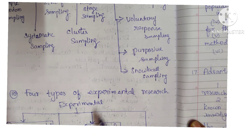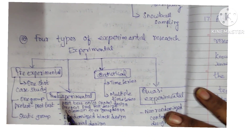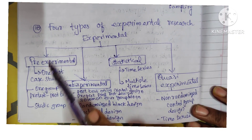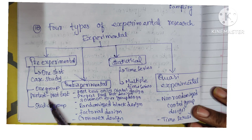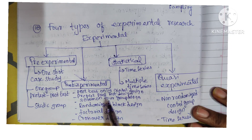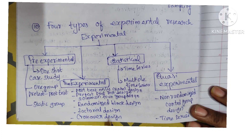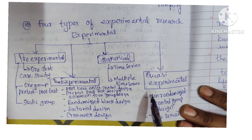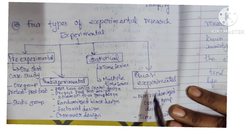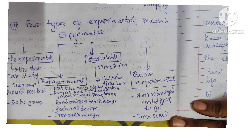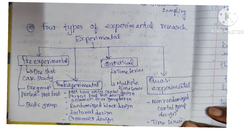Four types of experimental research: under experimental research, you have pre-experimental, statistical, quasi-experimental, and true experimental. Under pre-experimental: one-shot case study, one group pre-test post-test design, static group. Under true experimental design: post-test only control design, pre-test post-test design, Solomon four-group design, randomized block design, factorial design, crossover design. Under quasi-experimental: non-randomized control group design and time series design.